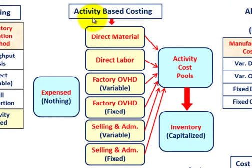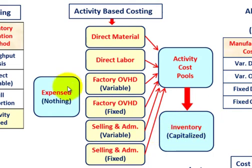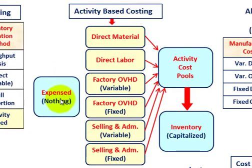So this is activity-based costing, and we'll look at it in terms of what we capitalize in inventory versus what is expensed. When we talk about activity-based costing, nothing gets expensed — everything gets capitalized in our inventory.